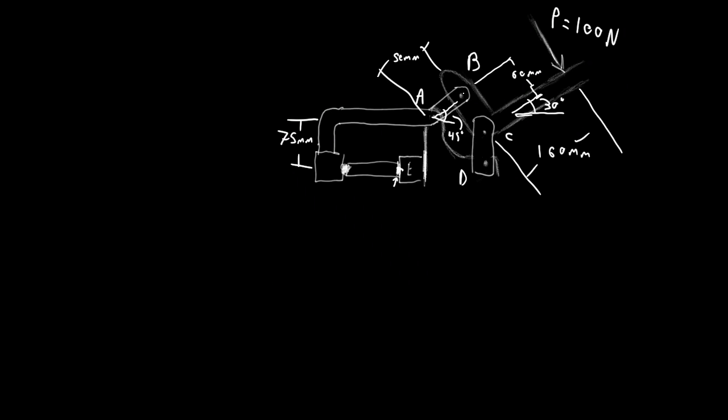We're going to start with member BCP, assuming this is point P. It might be a good thing to note that this is a two force member here, so you can only have two forces on there, so that's going to really help with our calculations.